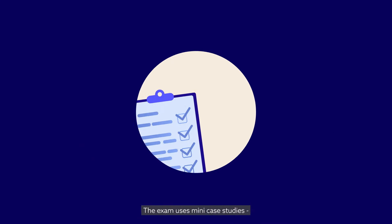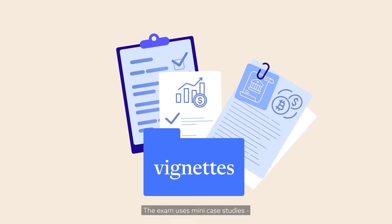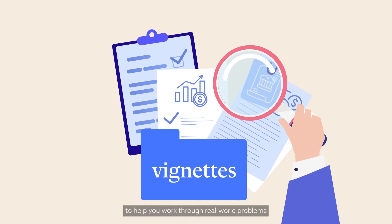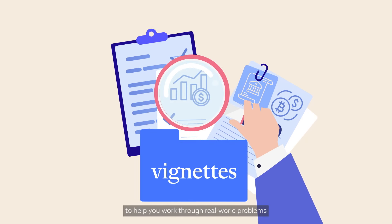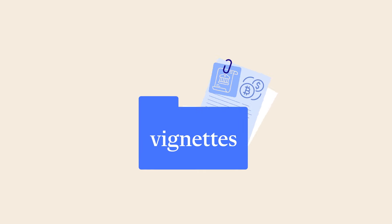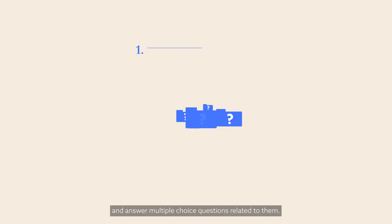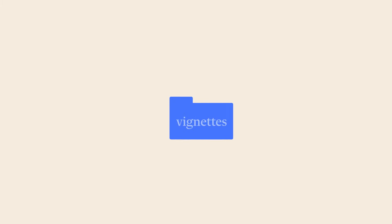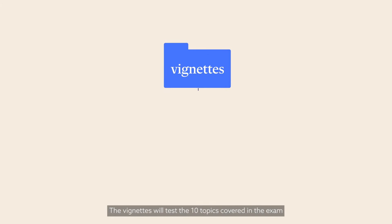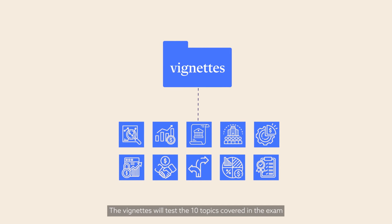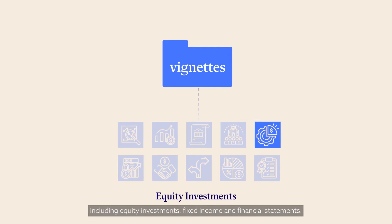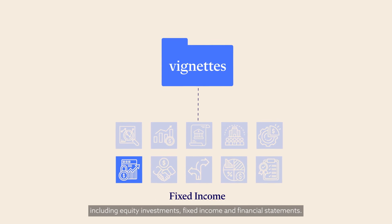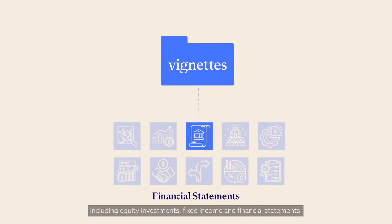The exam uses mini case studies — what we call vignettes — to help you work through real-world problems and answer multiple choice questions related to them. The vignettes will test the 10 topics covered in the exam, including equity investments, fixed income, and financial statements.